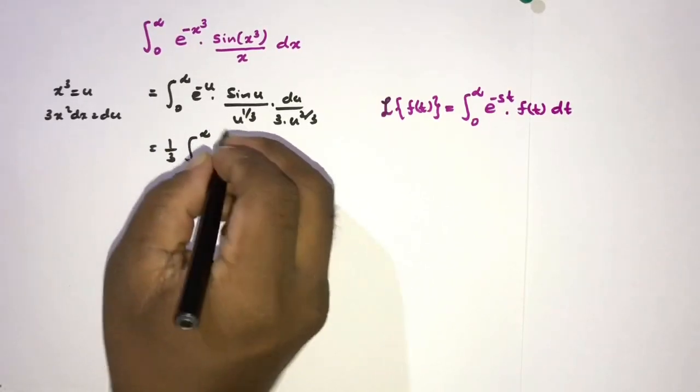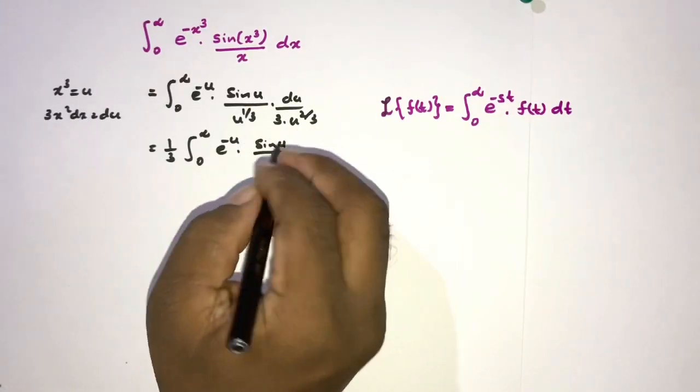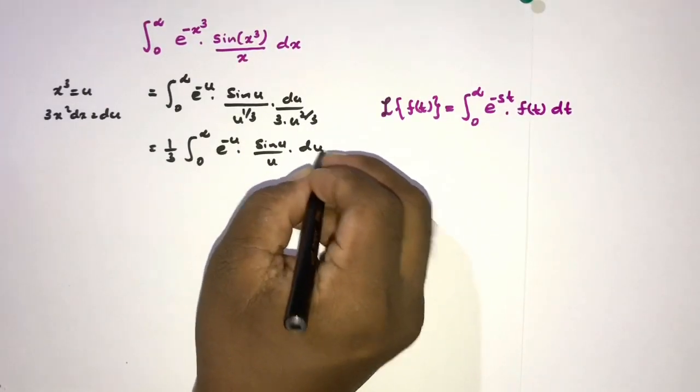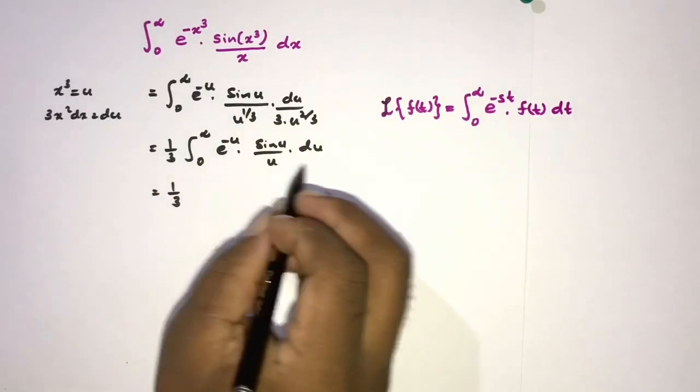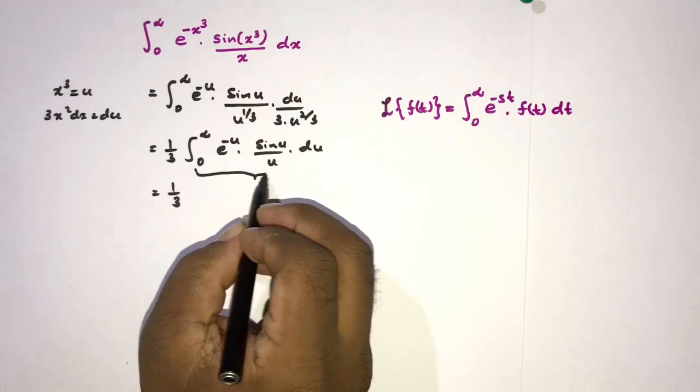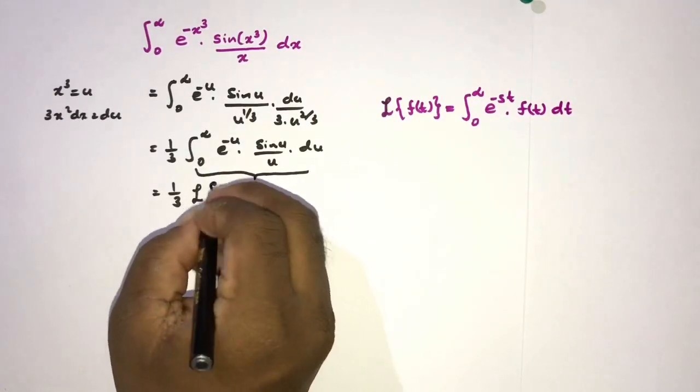Here we have 0 to infinity e^(-u) sine of u over u, du. Okay, then 1/3. Now we know this is equal to the Laplace transform of sine of u over u.